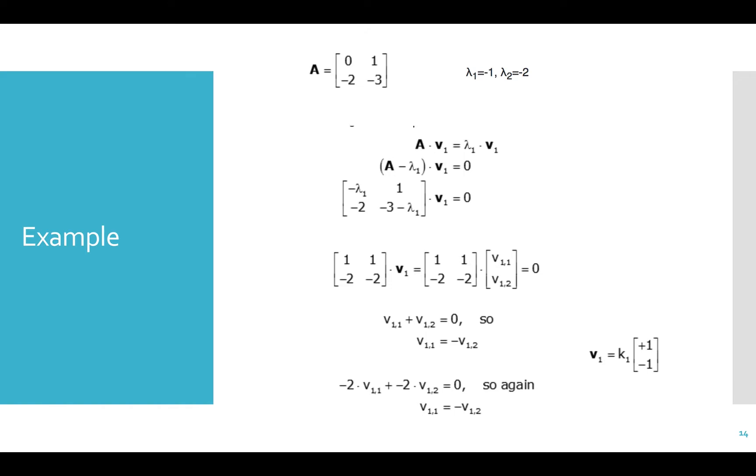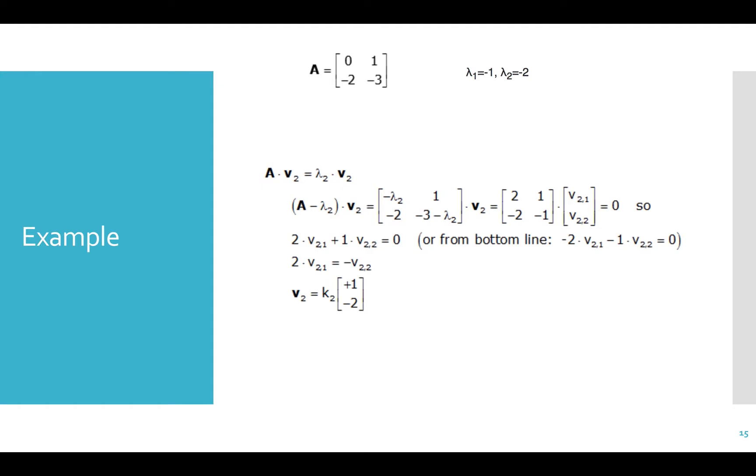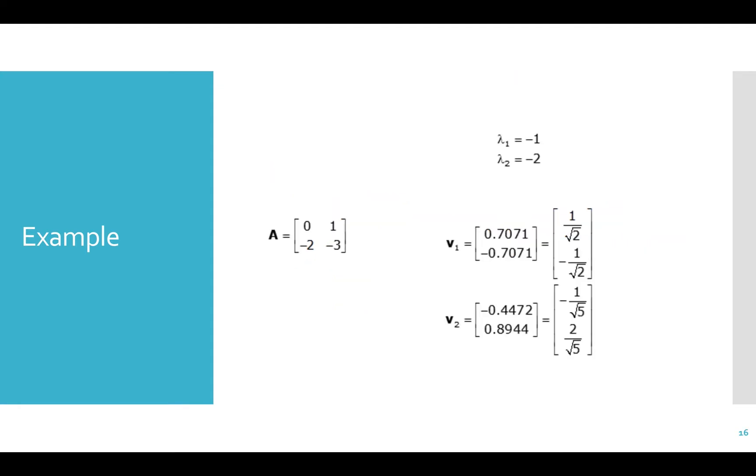Choosing v equals 1 negative 1 works. This little k1 in front is just saying what I just said, which is that any scalar multiple will work. Now we can do the same thing for v2, and we get v2 equals 1 negative 2. We typically want to normalize eigenvectors. We want them to have length 1. We can get them to have a length of 1 by dividing by their length. So we take v1 and divide by the length of v1. What's the length? The L2 norm. We do the same thing for v2, and this is what we get.